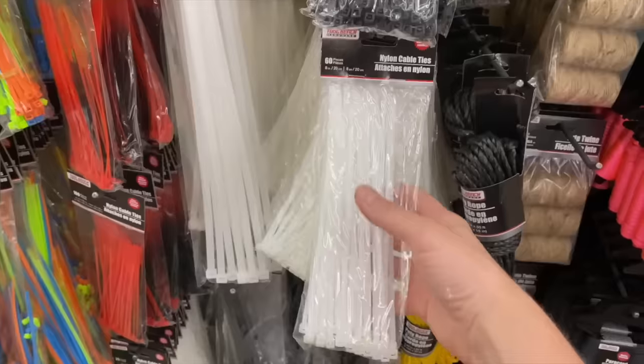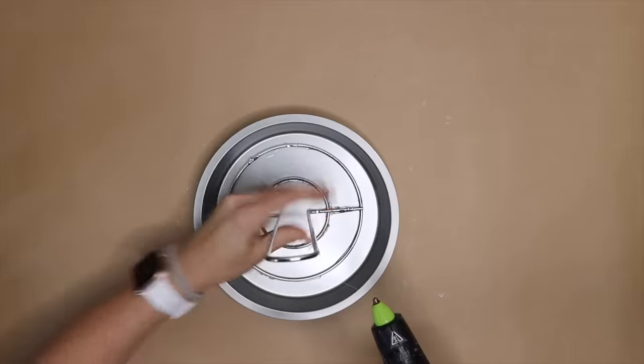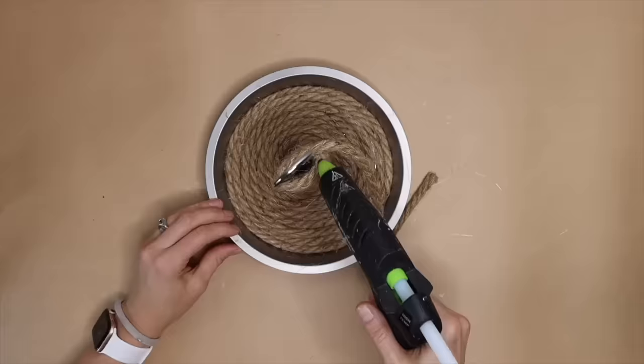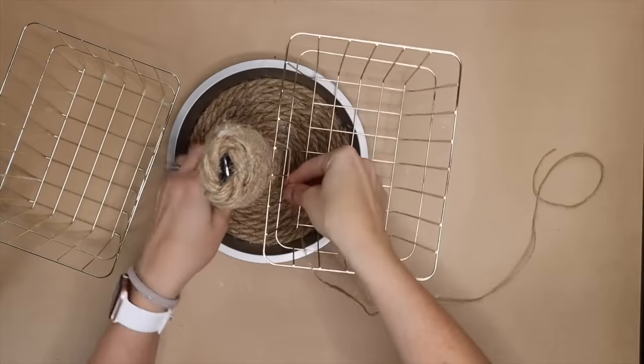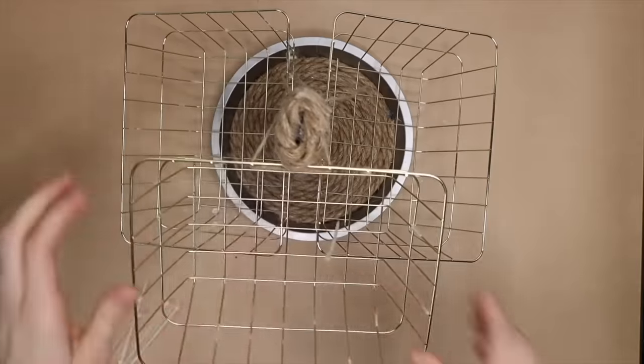Head to your local Dollar Tree. Start by hot gluing the paper towel holder in the center of one pan. Hot glue rope starting from the outer edge and work your way in, working up the center of the paper towel holder until reaching the top. Take twine and baskets and wrap, tie, and secure them on either side of the paper towel holder center.